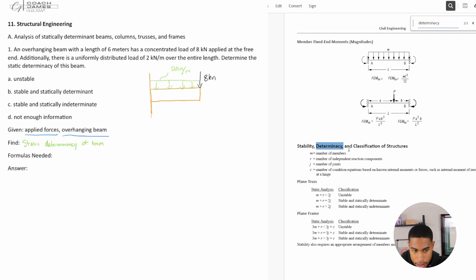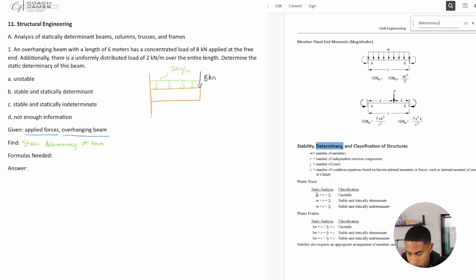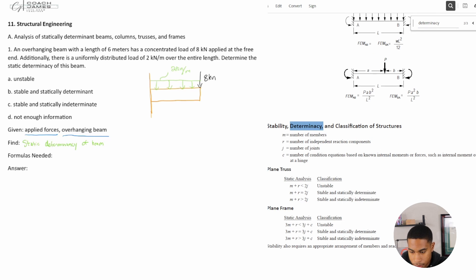Okay, so if I search determinancy, there's three things that come up. Stability, determinancy, and classification of structures. So with this, basically you can find whether something is stable, unstable, and statically indeterminate or statically determinate. And that's what our answer choice is pretty much asking us for. So we need to look at this and determine the number of members would be. So I would specifically use this frame equation down below, and I'm going to zoom in so you can see it a little bit better.